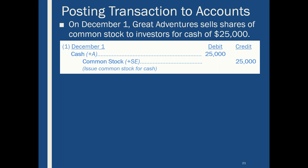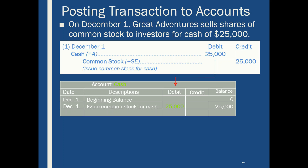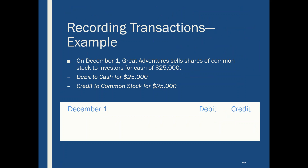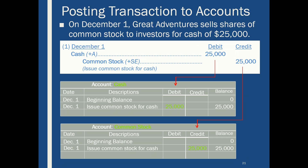The last step is posting individual accounts into the general ledger. This is nothing more than taking each part of the transaction and posting the individual entries to individual accounts. Anything that affects cash — in this case $25,000 — is recorded in its own account called cash, so we can keep track of everything that's happened with that account. Then we do the same thing with common stock.